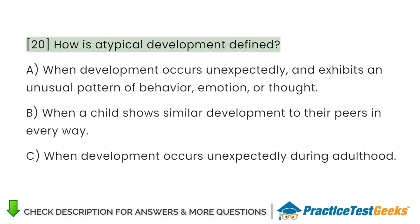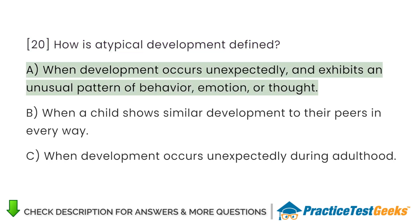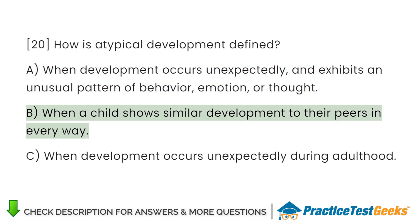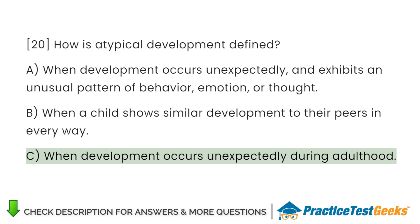How is atypical development defined? A. When development occurs unexpectedly and exhibits an unusual pattern of behavior, emotion, or thought B. When a child shows similar development to their peers in every way C. When development occurs unexpectedly during adulthood